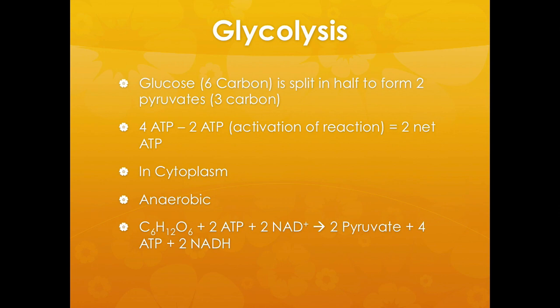Glycolysis is the first main event. Glucose is a 6-carbon molecule and it gets split in half to form two pyruvates, each a 3-carbon molecule. In glycolysis, you get four ATPs, but to undergo glycolysis it requires two ATPs. So the net gain for glycolysis is two ATPs. Glycolysis happens in the cytoplasm and it is anaerobic, meaning it does not require oxygen.